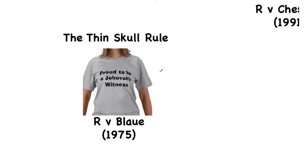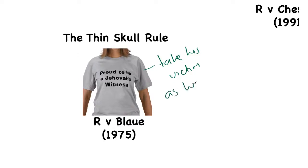Roberts makes clear that only extreme acts will break the chain of causation — only where the victim's act is so stupidly daft will the chain be broken. But we must consider this in conjunction with the thin skull rule. The thin skull rule says the defendant must take his victim as he finds him. This means that even if injury or death is not reasonably foreseeable, the law still considers the defendant liable if the victim suffered from some physical or mental condition that made them more vulnerable.